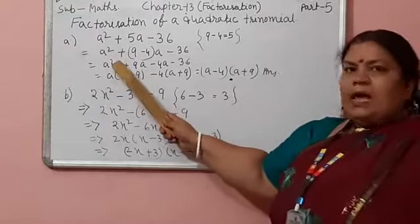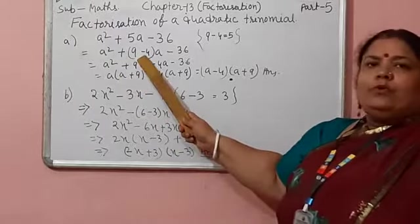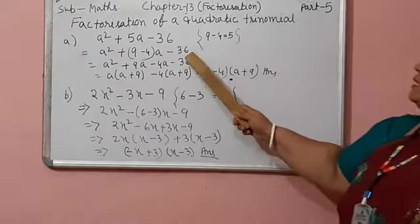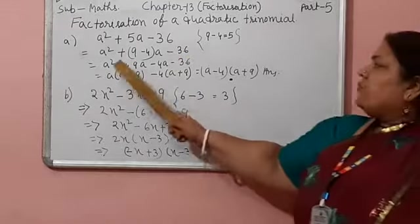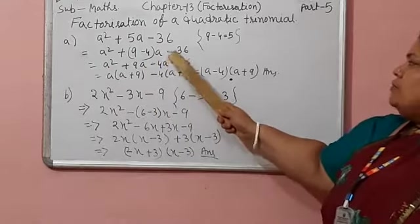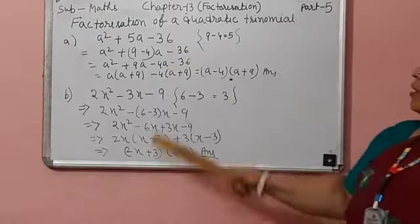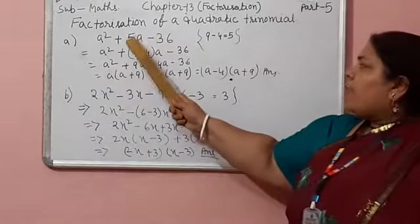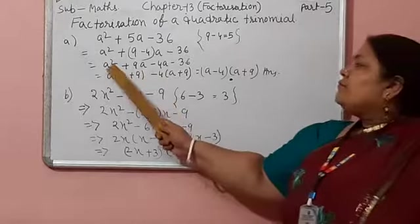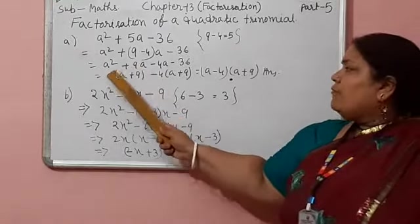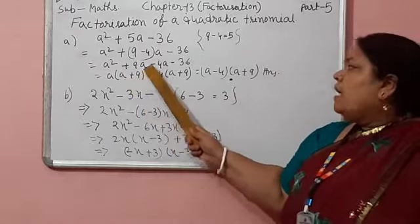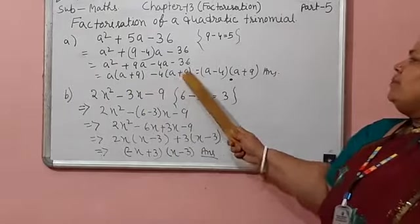A square plus 9 minus 4 bracket complete. And then you write a. Now minus 36. So a square plus 9a minus 4a minus 36. From that means we spread 5a into 2 different terms. Now we take common a from these 2 terms. A, a plus 9 minus 4a plus 9.